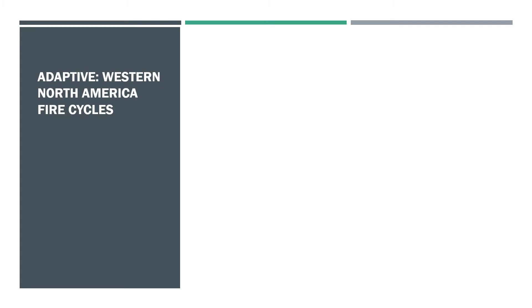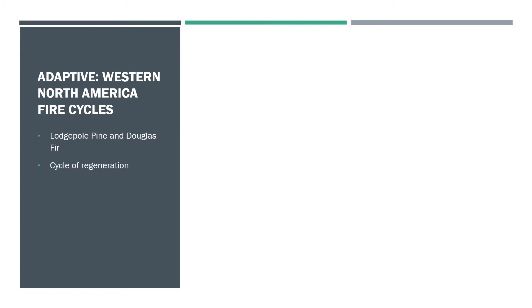One example of an adapted ecosystem is the Western North American conifer forests. Home to the lodgepole pine and Douglas fir, these ecosystems are heavily adapted to deal with consistent fire. They form special relationships that create a cycle of regeneration in the forest.